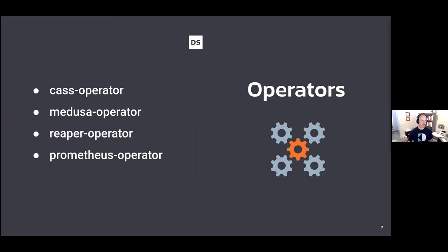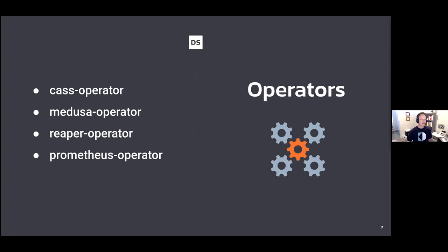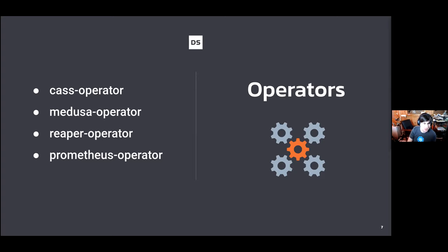The upgrade case is essentially a rolling restart with a twist — we're just going to change the binaries. One of the key features we don't talk about enough is canary upgrades. We can target a single node or a selection of nodes to upgrade before moving on to the rest of the cluster as a whole. But we need to also talk about how to actually talk to the system instead of just running it.